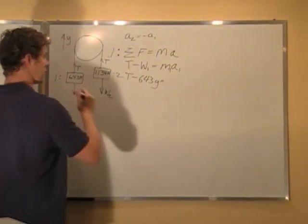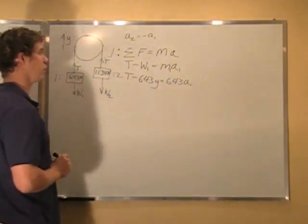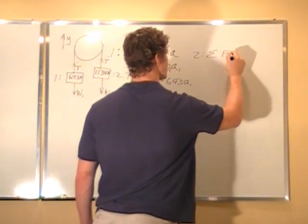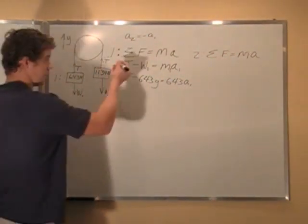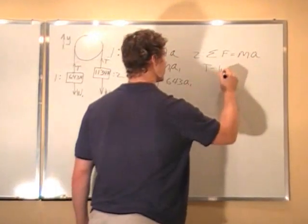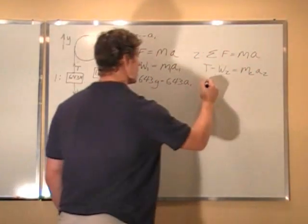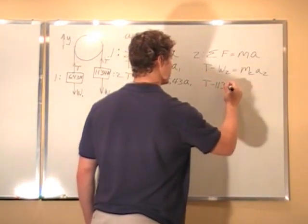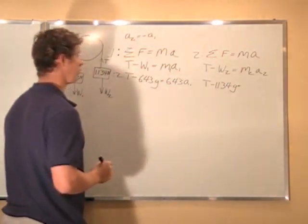w is mg which is 643 g. m is 643 a1 and that is what we are looking for. So let's do the same for block two. Sum of the forces equals mass times acceleration. So sum of the forces. We have tension again. Minus weight equals mass times acceleration.